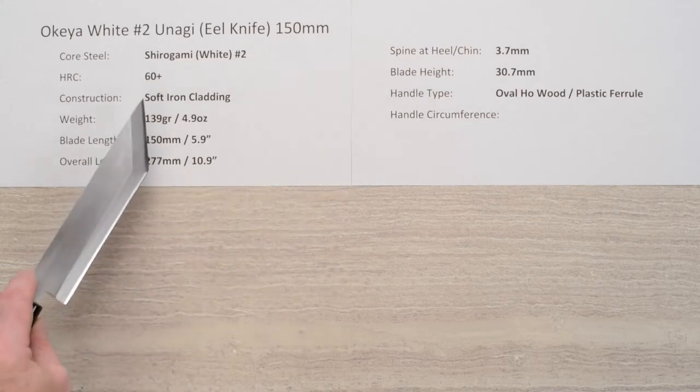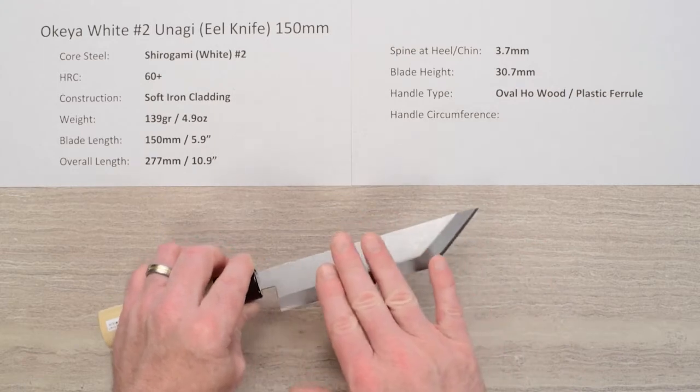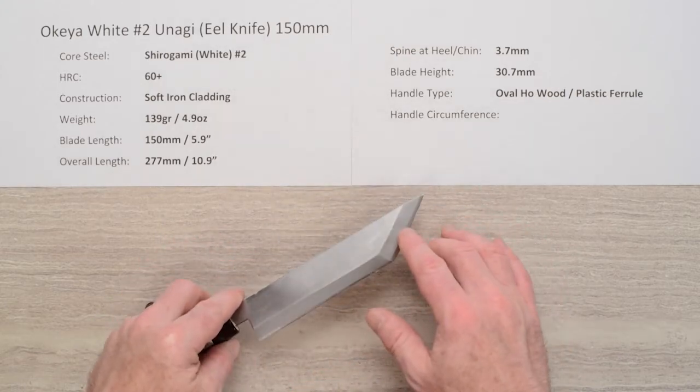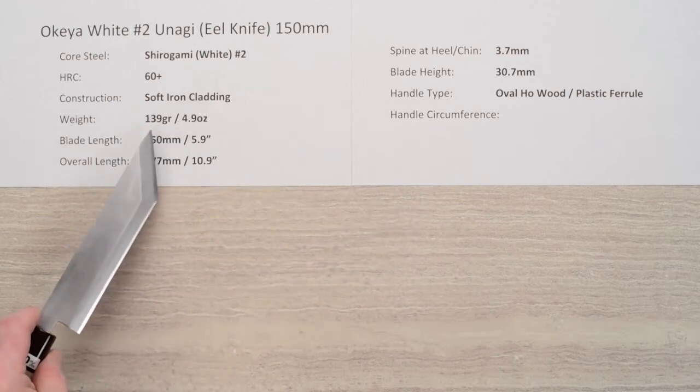He treats it to about 60 Rockwell on that core steel. The construction is a soft iron cladding on the right side of the blade as you hold it, and you can see that moving out into the edge there. The weight on the knife is 4.9 ounces, 139 grams.